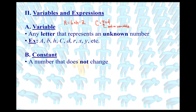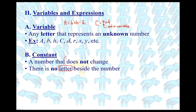We also have a constant, which is a number that does not change. Pi could fit into that category since it's always the same number — always 3.14. However, we're going to add a second criteria: you cannot have a letter or a variable beside a constant. In the circumference equation, pi is beside the letter d, so it's not going to fall into the category of being a constant.